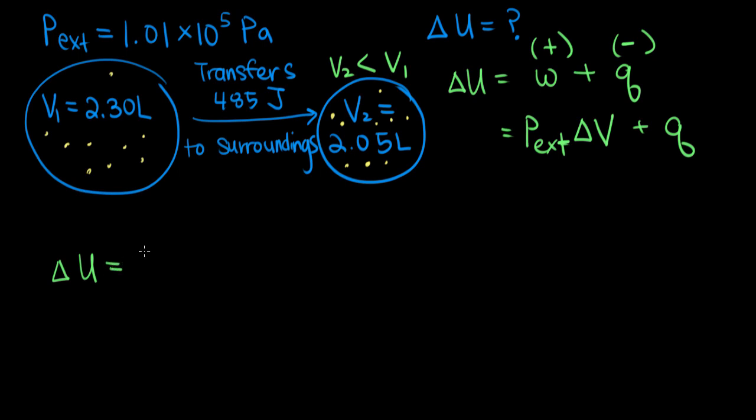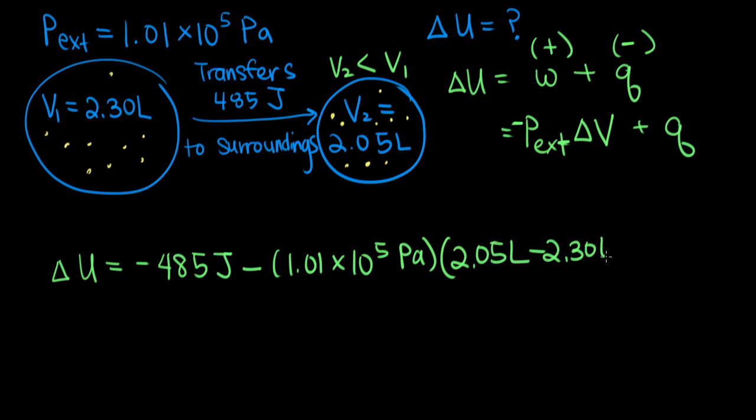So if we start plugging that in, we get that delta U is equal to negative 485 joules. So that's our heat. We know it should have a negative sign, because the heat was transferred to the surroundings. So negative 485 joules, minus the external pressure, 1.01 times 10 to the fifth Pascals, times our change in volume. So that's our final pressure, 2.05 liters, minus our initial pressure, which is 2.30 liters.